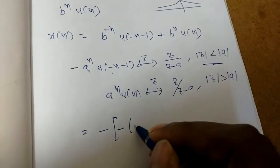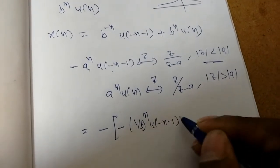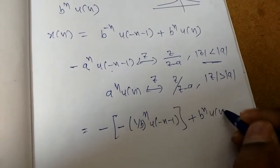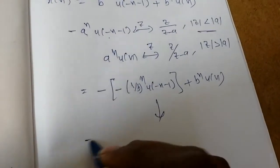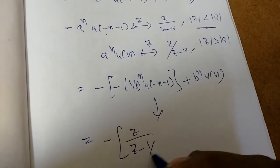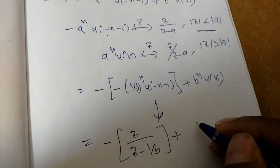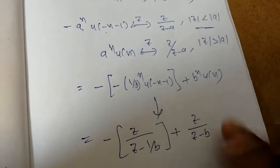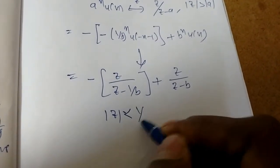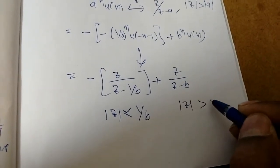We rewrite the term as 1 by b power n times u of minus n minus 1, plus b power n times u of n. Taking the Z transform, we get minus of Z by Z minus (1/b), plus Z by Z minus b. The ROC for the first term is mod z less than 1 by b, and for the second term, mod z greater than mod b.